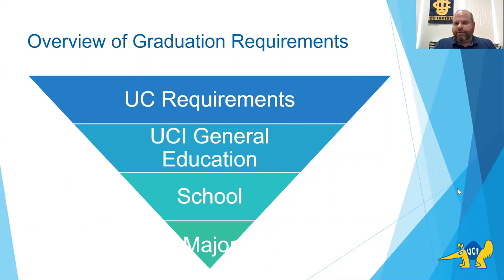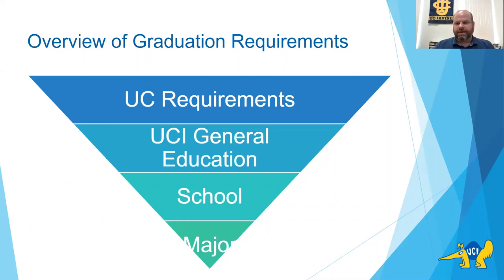We're going to talk about four different areas of requirements. First are UC requirements, which are the same for all campuses — Irvine, UCLA, Davis, and so on. Then we'll talk about UCI general education courses, then School of Social Sciences requirements, and finally major requirements specific to economics.